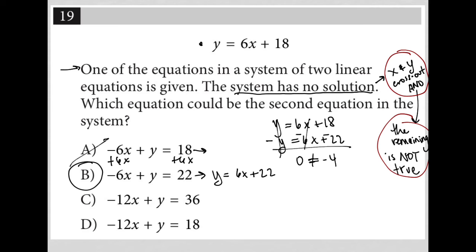choice C would become y equals 12x plus 36. So when I combine that with the original equation, y equals 6x plus 18, and y equals 12x plus 36.